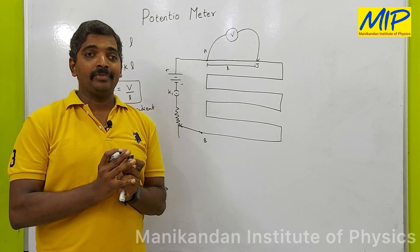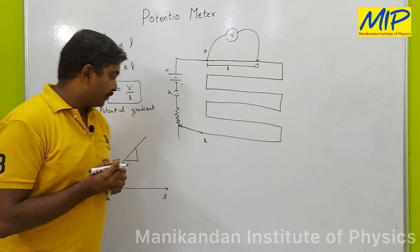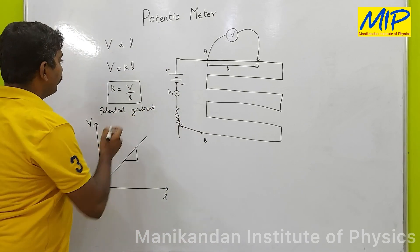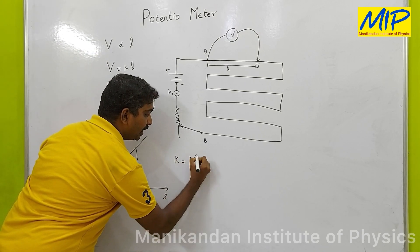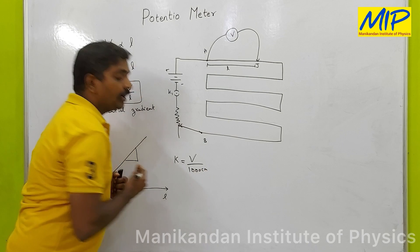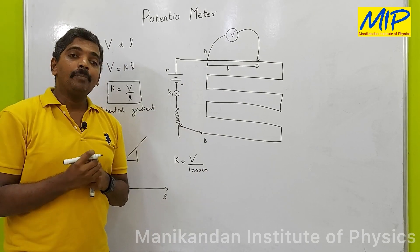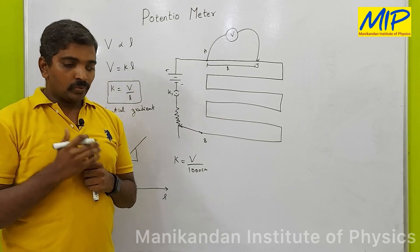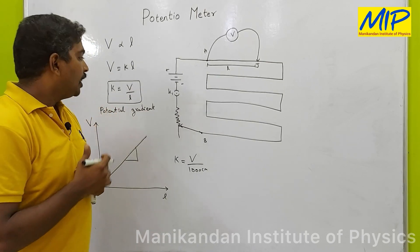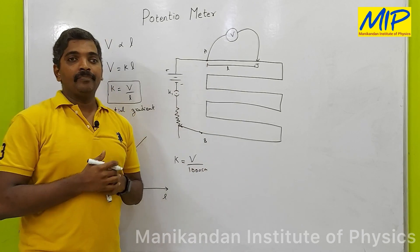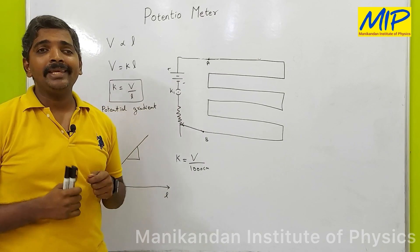Why do we take 10 meters? Because 10 meters equals 1000 centimeters. If I write K equals V divided by 1000 centimeters, I can get the accuracy of the potential drop up to the third order. So, to increase the level of accuracy or sensitivity of the potentiometer, we use 10 meters.